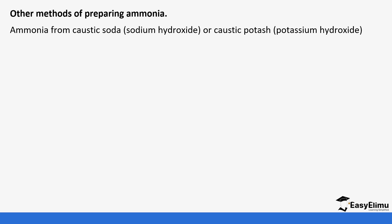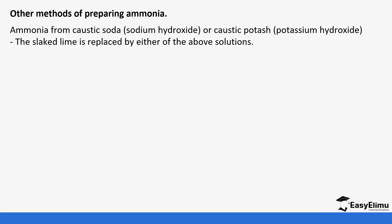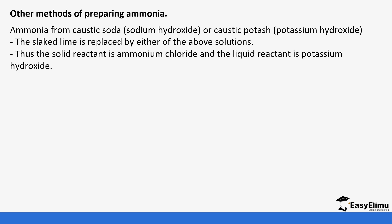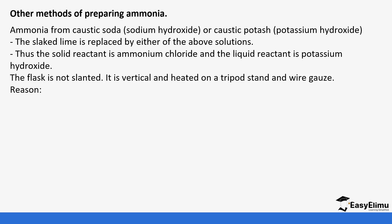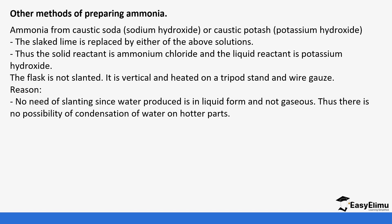Other alkalis can be used apart from calcium hydroxide — for example, caustic soda (sodium hydroxide) or caustic potash (potassium hydroxide), replacing the slaked lime. When potassium hydroxide or sodium hydroxide is used, we do not need to slant the flask because during this reaction water is produced in liquid state, unlike when ammonium chloride reacts with calcium hydroxide where water is produced as a gas.